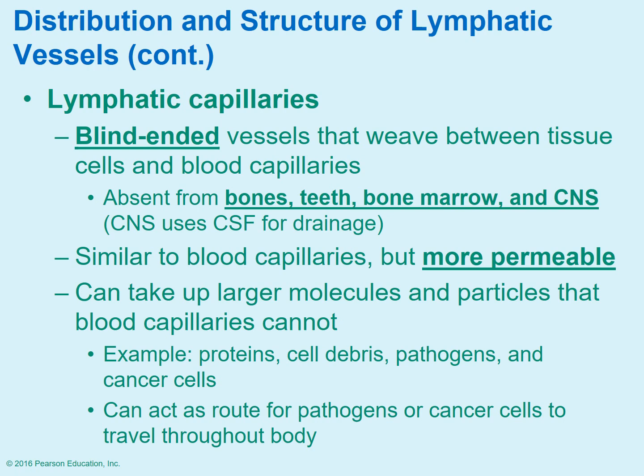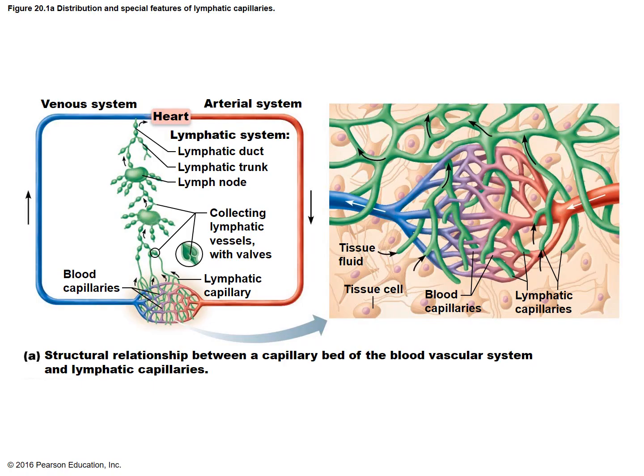From a positive standpoint, it's good that they can take up proteins that may have leaked out. The disadvantage is that because they're feeding things back to the blood, they can be a pathway for cancer cells that have broken off a tumor to move, and also a pathway for pathogens — those microorganisms that cause disease — to move through the body. Once they're in the blood, it becomes systemic and can go anywhere in the body.